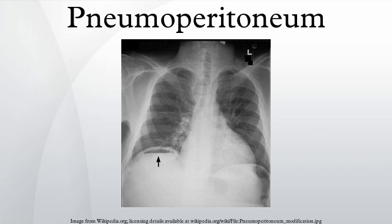Differential diagnosis includes subphrenic abscess, bowel interposed between the diaphragm and liver, and linear atelectasis at the base of the lungs, which can simulate free air under the diaphragm on a chest X-ray. See also: football sign, Rigler's sign. References: Ali, Noyes, Khan, E-Medicine.com.